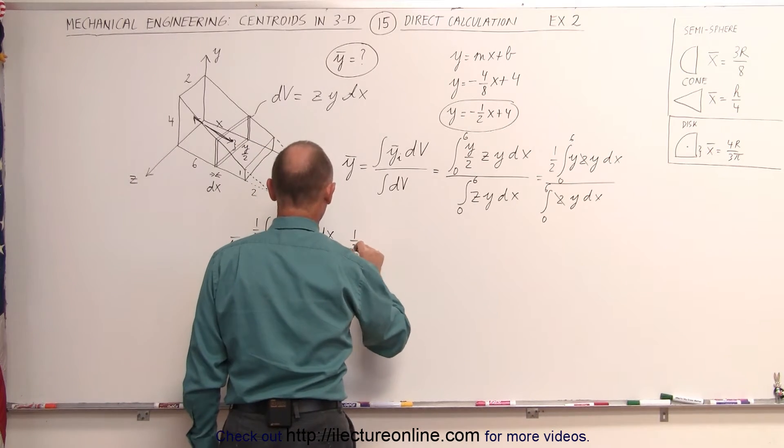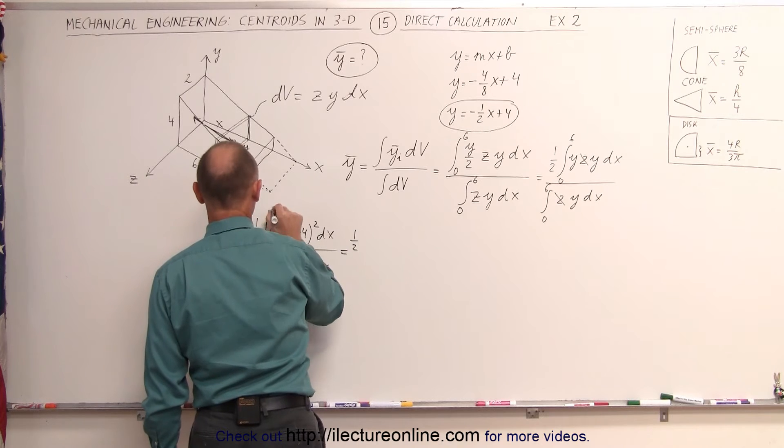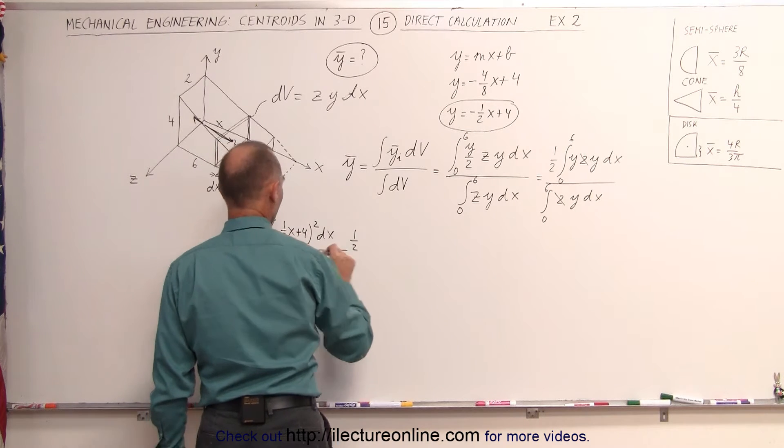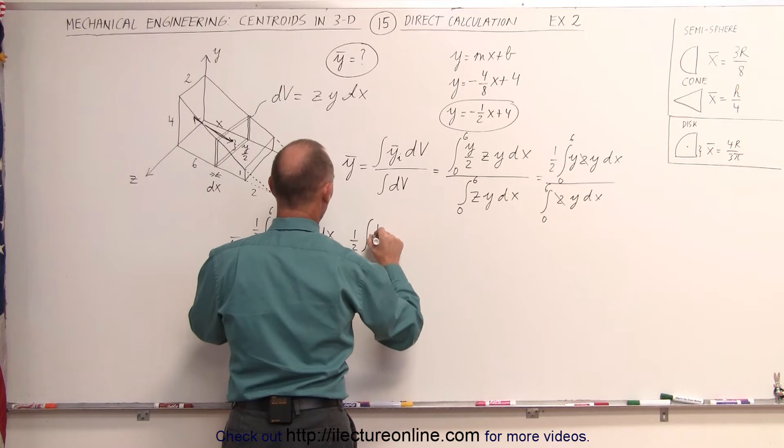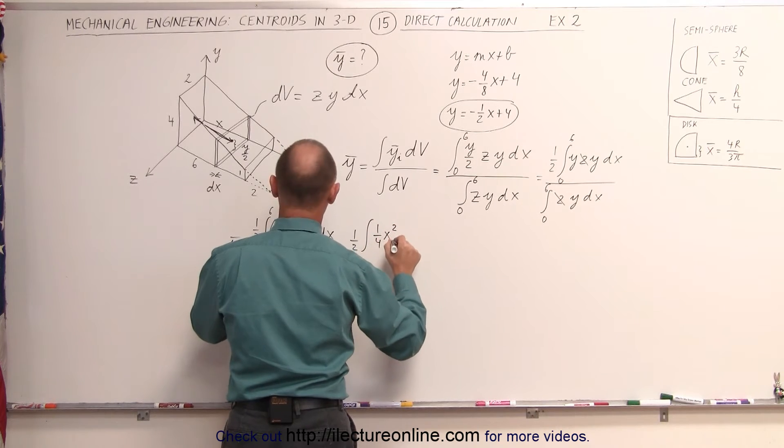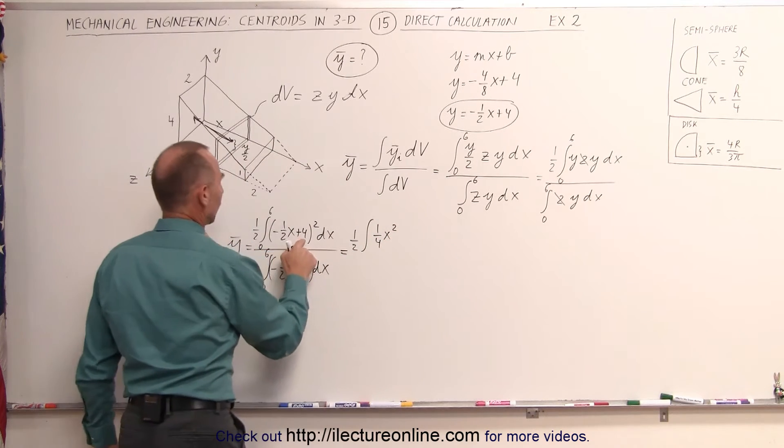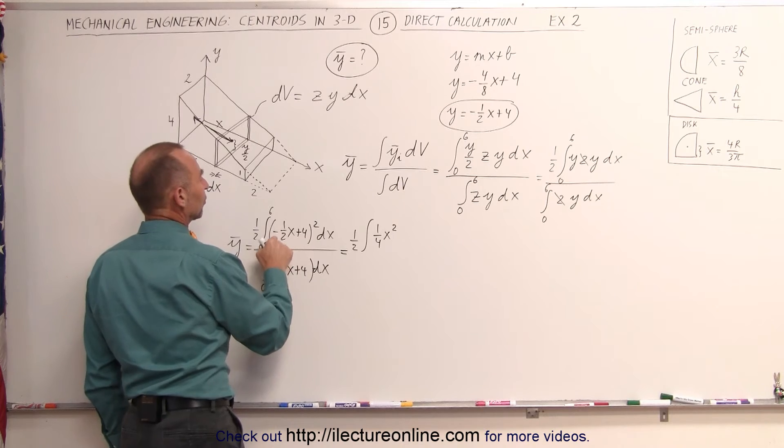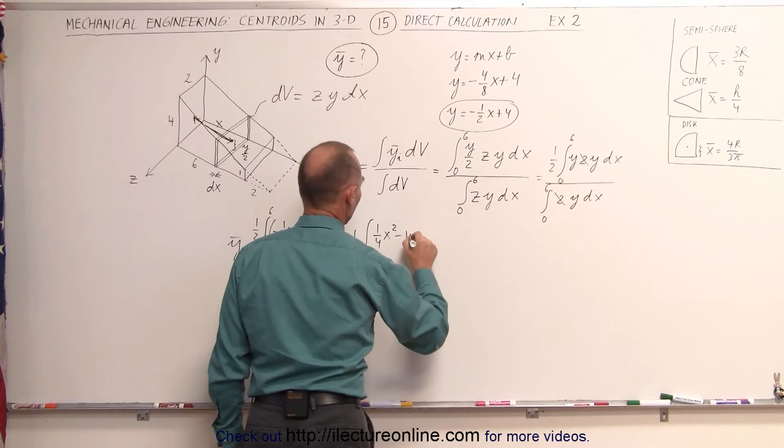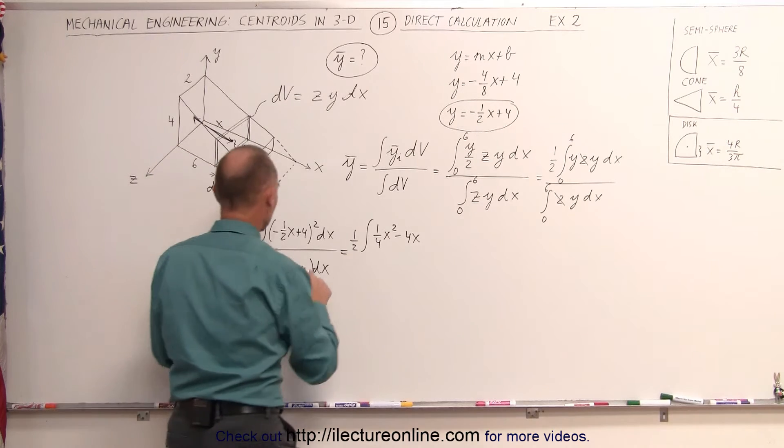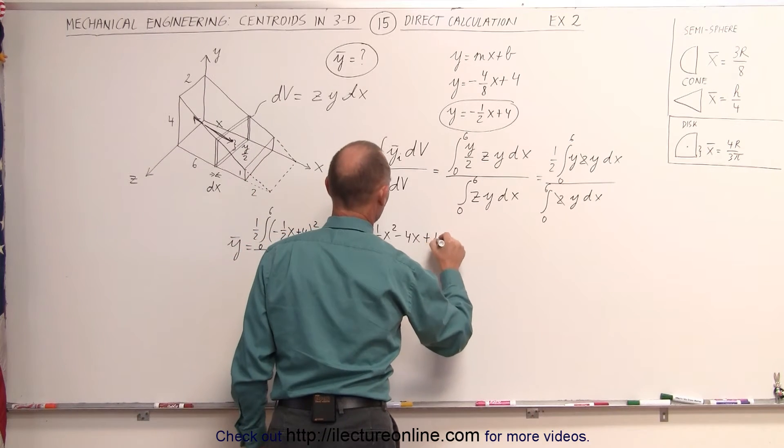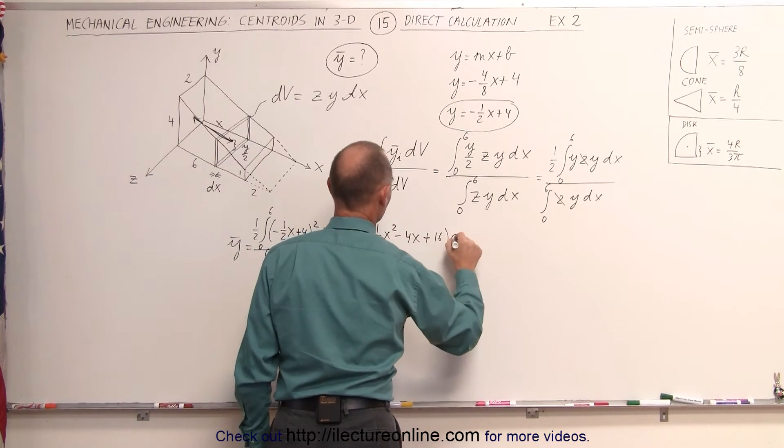This is equal to one-half. The limits are from 0 to 6, from 0 to 6. One-half times the integral of, square this, I get one-quarter x squared. 4 times this is a minus 2x, double that is a minus 4x, because you do twice the product of the two terms, and then you get plus 16, all that times dx.